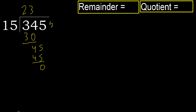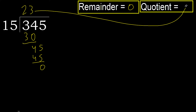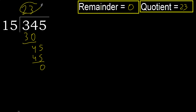Next: there is no more number, therefore finish it. 345 divided by 15 is 23.